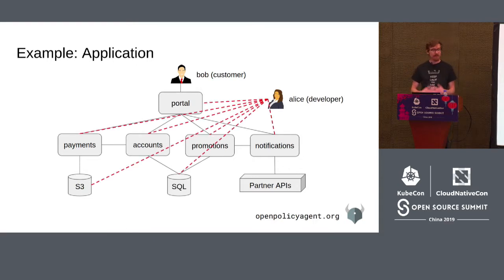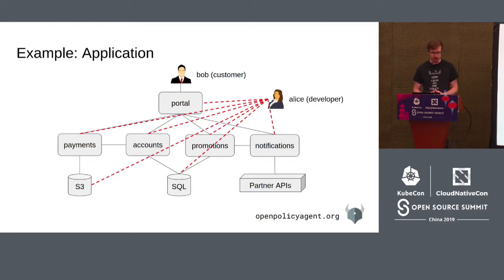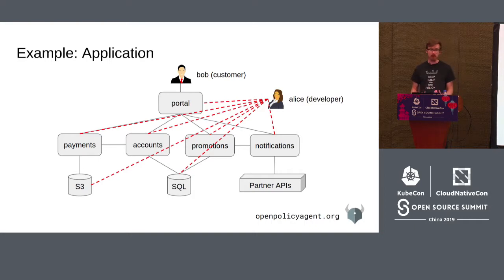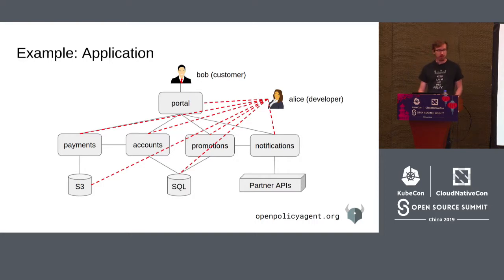The problem is that today, somebody like Alice, as a developer, often has complete access to all the services that make up the application. Alice is a developer at the company, so she often has to troubleshoot the services. She has complete access to the portal, payment services, account services, and so on. This is important because Alice needs to debug and access these services. But it's risky — if she decides she wants to look up Bob's credit card number or private information, she can do that. She has a lot of permissions in the system.